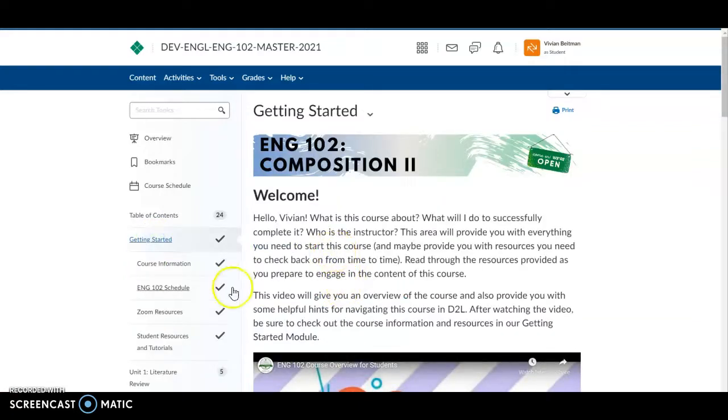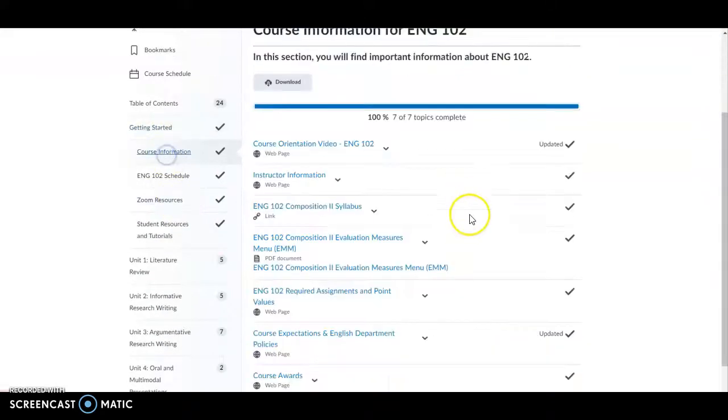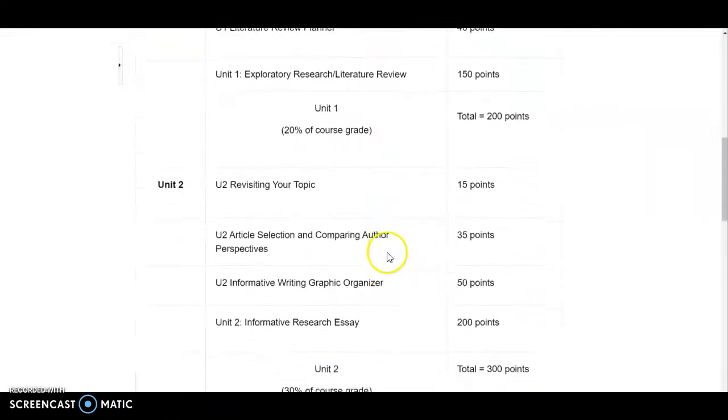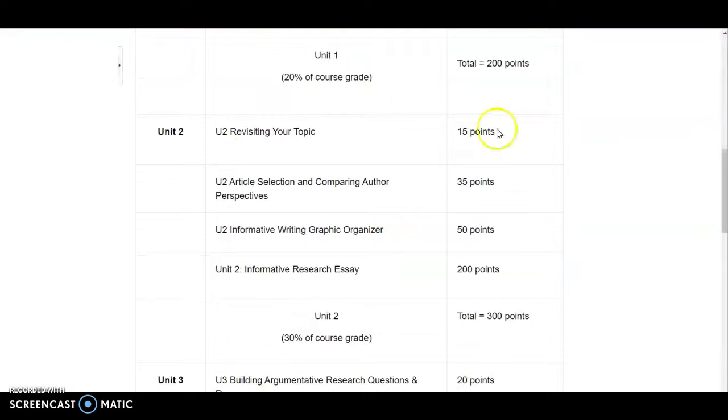Within Getting Started, you have probably already looked at this, but I will refresh your memory. In Course Information, you can look at the required assignments and point values. You can see that this entire unit is worth 30% of your course grade. We really do encourage you to try to submit your best work. If you have any questions, feel free to get in touch with your instructor.